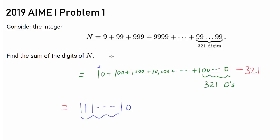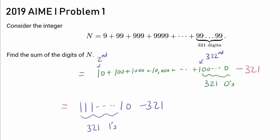How many ones do we have? Well, we're starting with this 1 being second digit from the right, all the way to this 1 being the 322nd digit from the right. So we have 321 ones followed by a 0, and we're taking away 321.